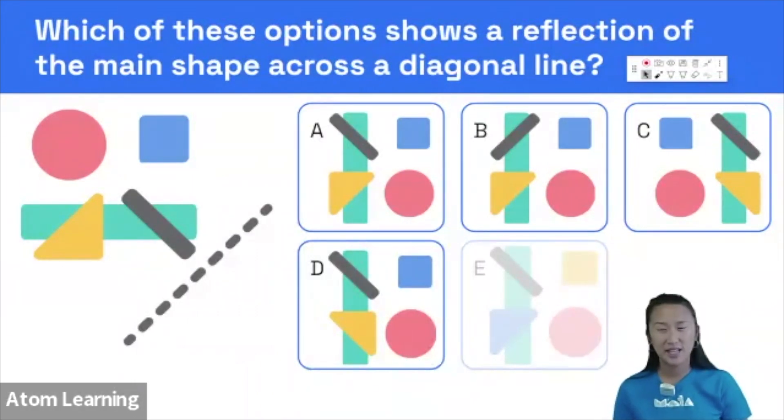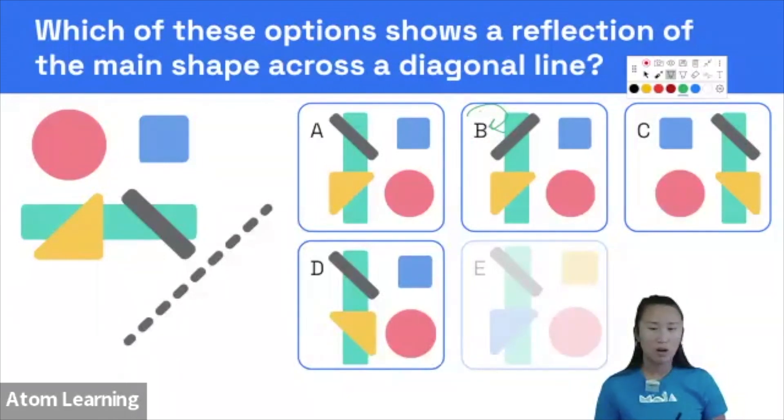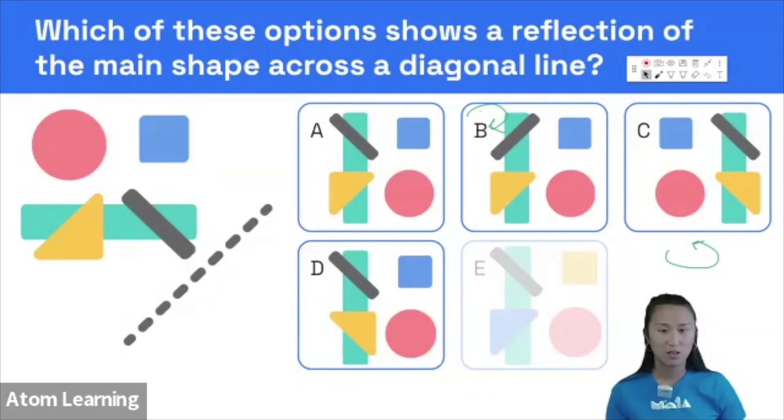So B is a 90 degrees clockwise rotation rather than a reflection, so it's been rotated like this. Whereas C over here is a 90 degrees anti-clockwise rotation. So it has been rotated this way. They're also incorrect. So we can rule them out.